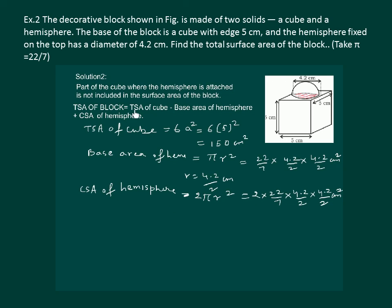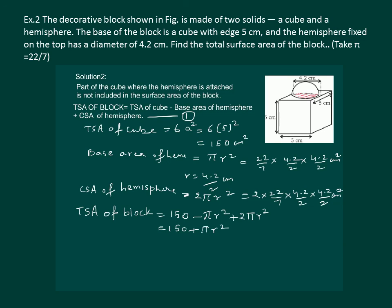Substitute all the values in the first equation. Notice that instead of writing the values we have taken the expression because this can make our calculations easier. Here we will get 150 plus πr², which will give us 150 plus 22/7 into 4.2/2 into 4.2/2, which is equal to 150 plus 13.86. So total surface area of the block comes out to be 163.86 cm².